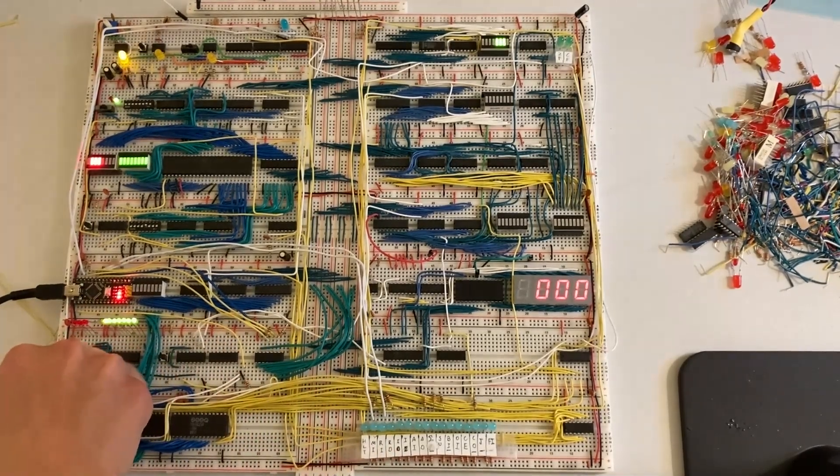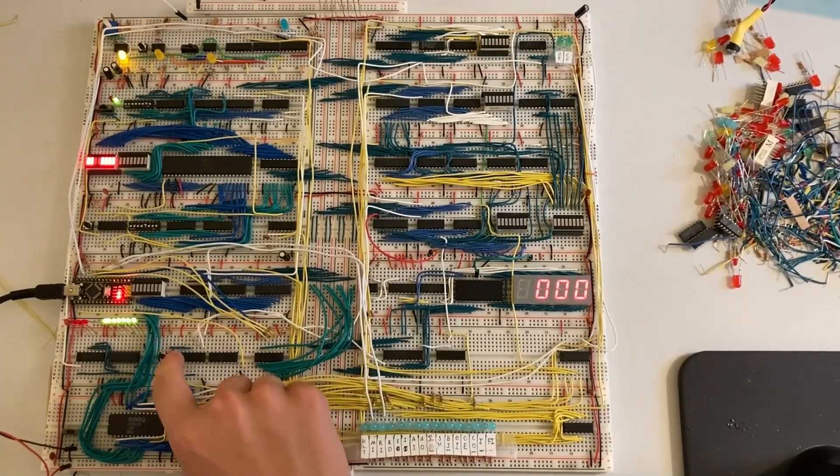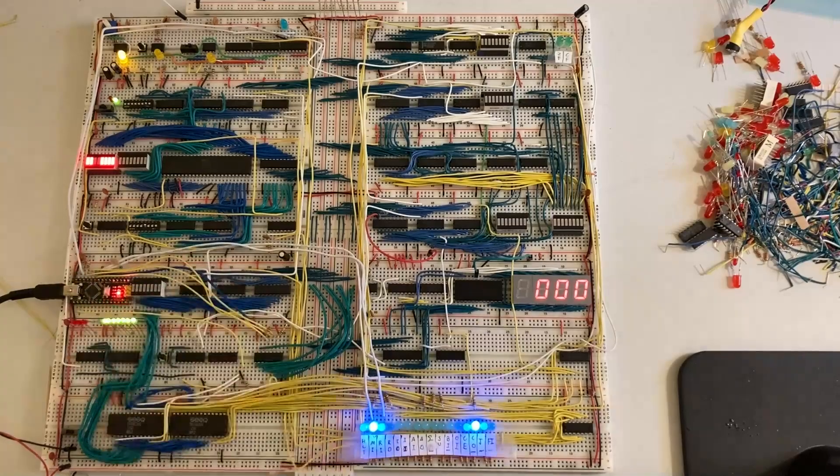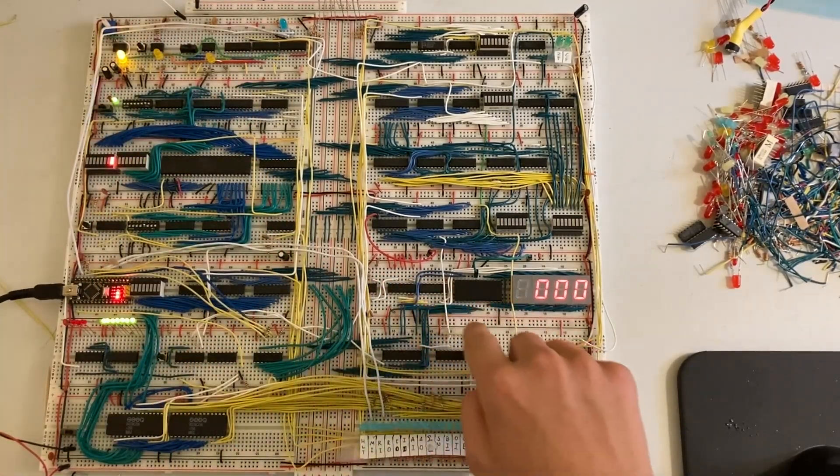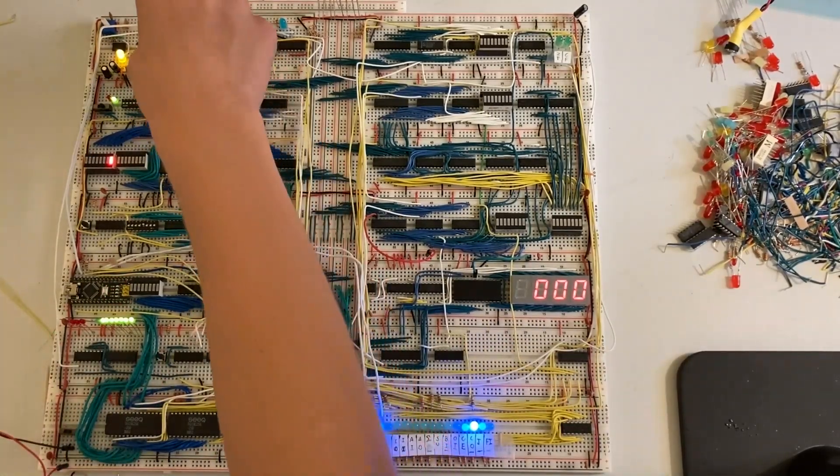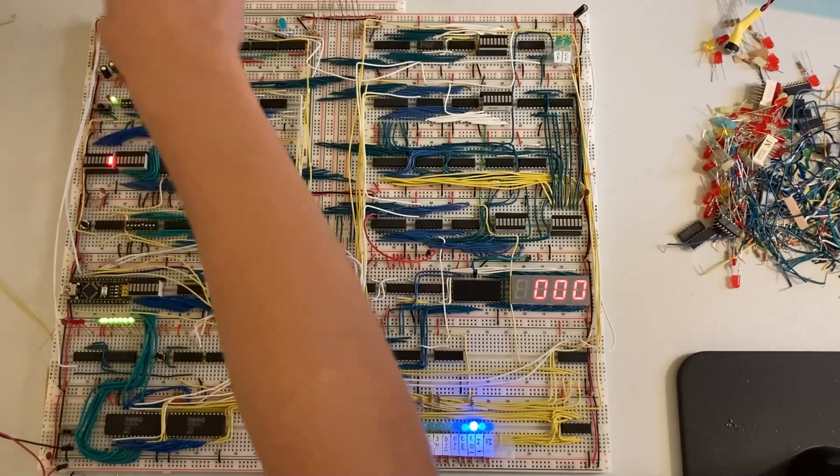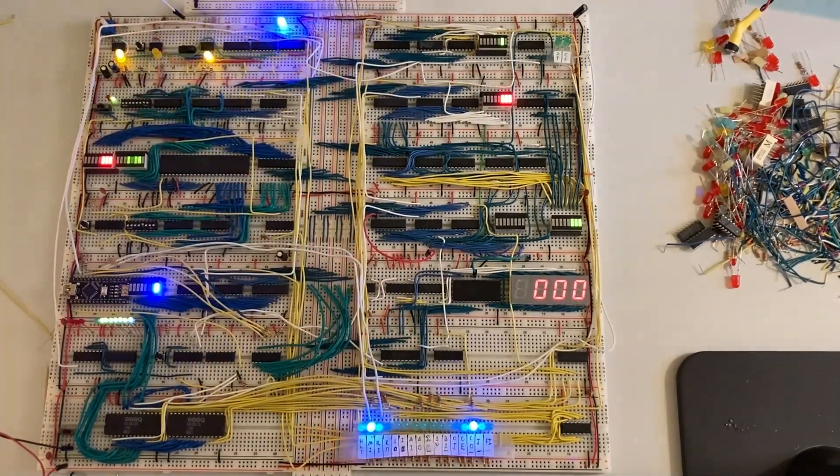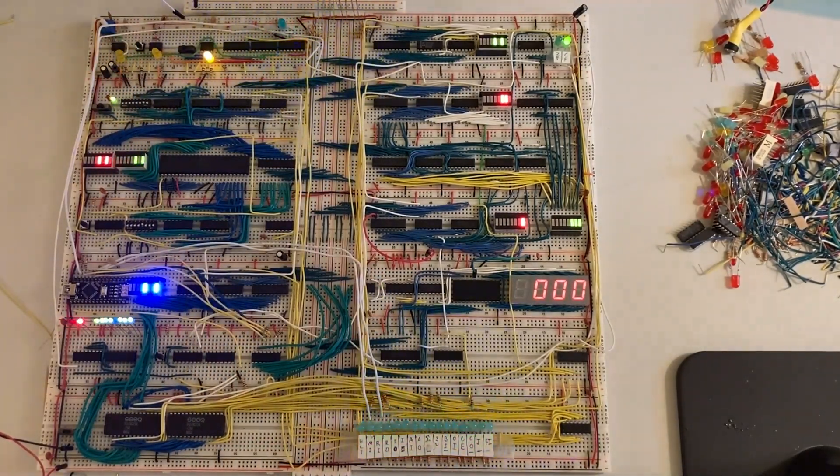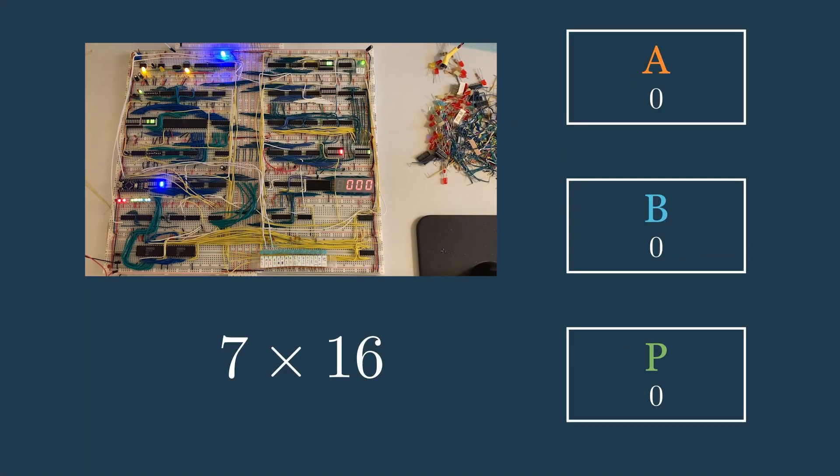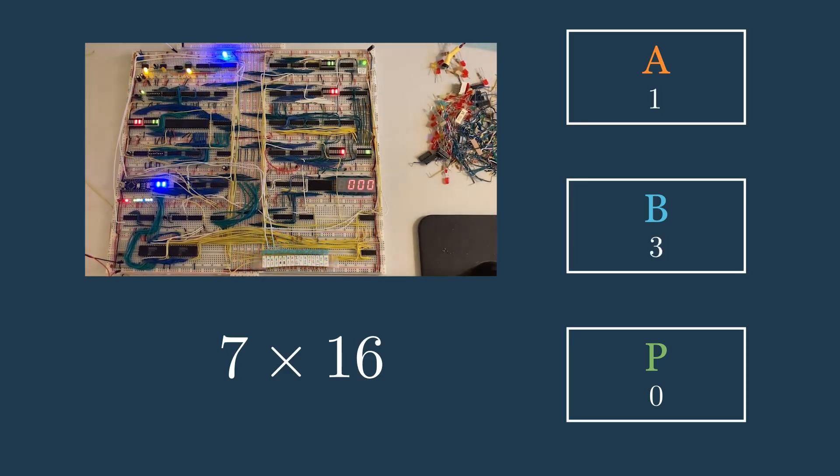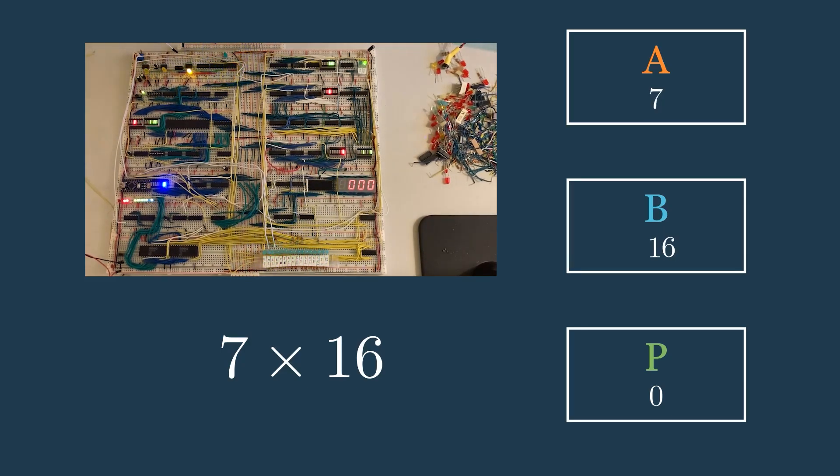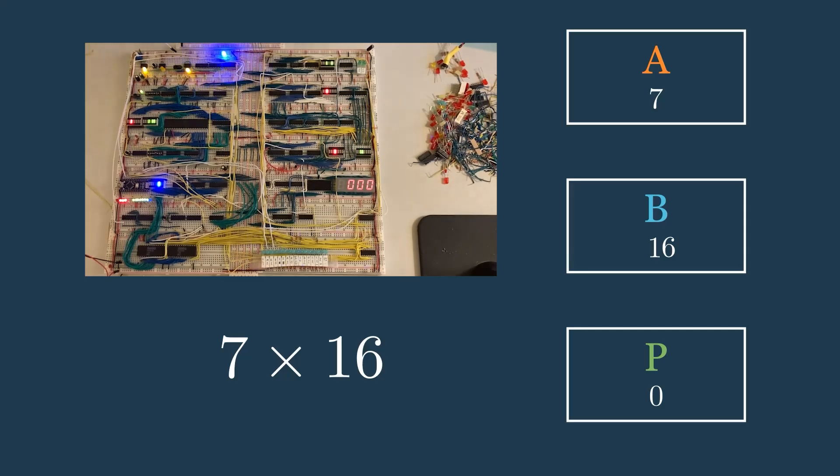So what I'll do first is plug in this Arduino to program the RAM. That's just where the program is stored for the computer to run. Once it's done programming, I'll quickly reset it, and then I'll start the clock, which just starts the program running. So the basic way this program works is we're multiplying the number 7 by the number 16. We'll keep track of one variable, a, and we'll store that as 7. Then for the variable b, we'll store 16 in there. Lastly, we have another variable p, which will be our product or the result of our multiplication, which we'll set to 0.